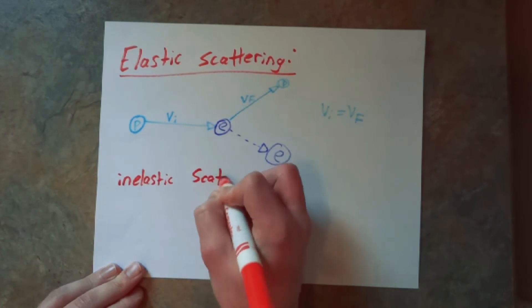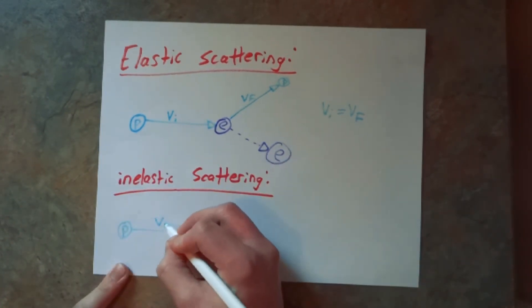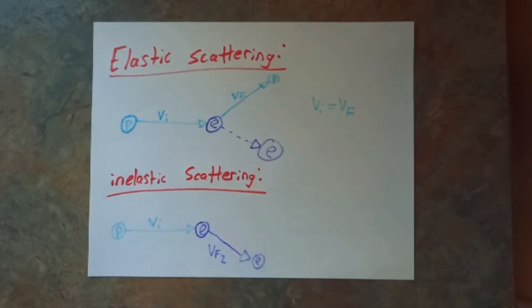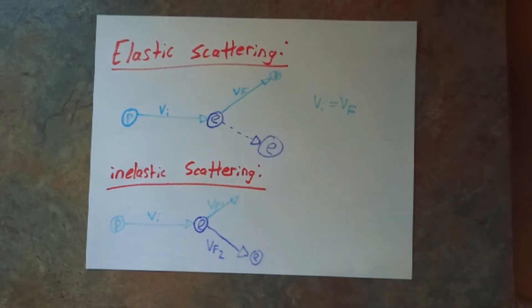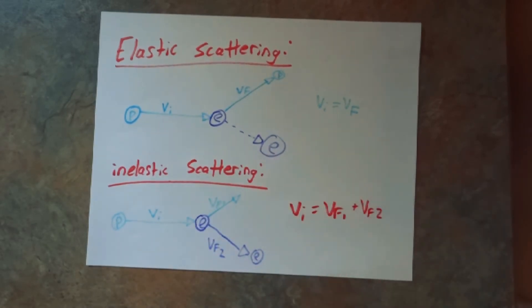In inelastic scattering, the initial velocity of the photon has to be equal to the final velocity of the photon plus the final velocity of the electron. This means that the kinetic energy of the photon initially is equal to the final velocity of the photon plus the final velocity of the electron.